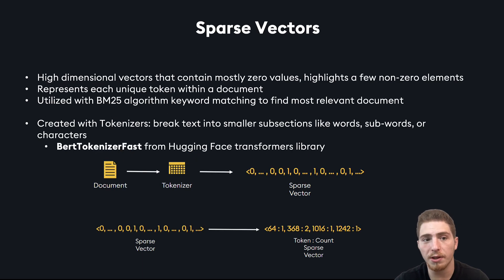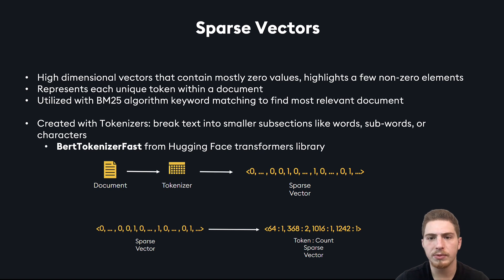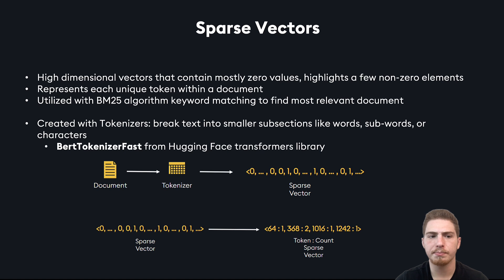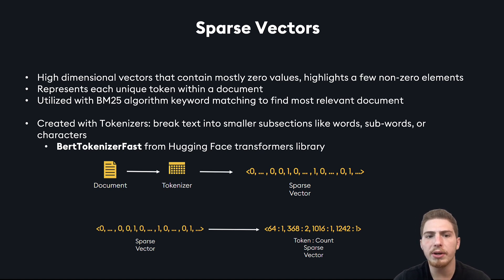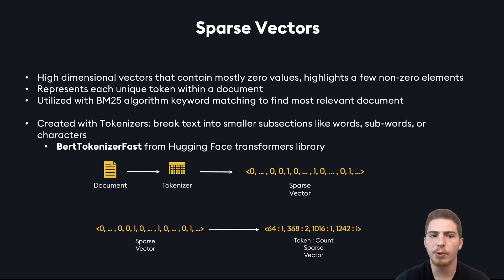Sparse vectors, on the other hand, are high-dimensional vectors that contain mostly zero values, which means that the few non-zero elements are going to be highlighted. The sparse vector represents each unique token within a document. It uses the BM25 algorithm to match keywords and find the most relevant document to our query.